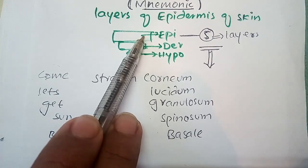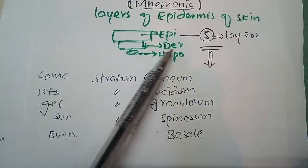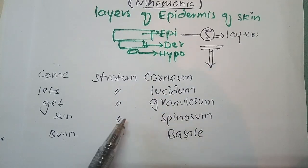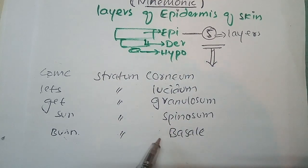It has five more sub-layers which are stratum corneum, stratum lucidum, stratum granulosum, stratum spinosum, and stratum basale.